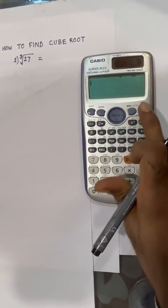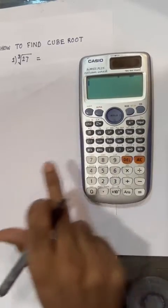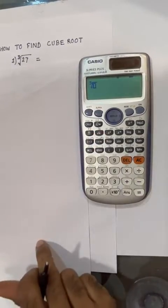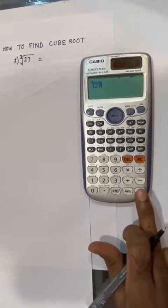Press the on button on your calculator, then press shift and cube root. Press 27 and then press equal to.